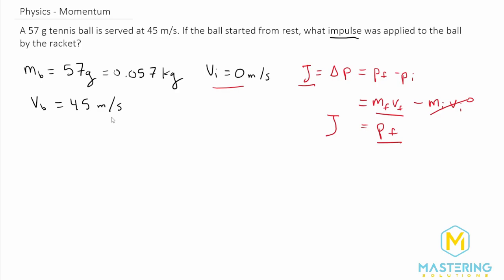Now that we have that, we have our formula right here. J, our impulse, is going to be equal to the mass final times the velocity final, which is 0.057 kilograms. Now we're going to multiply that by the final velocity, which was 45 meters per second.